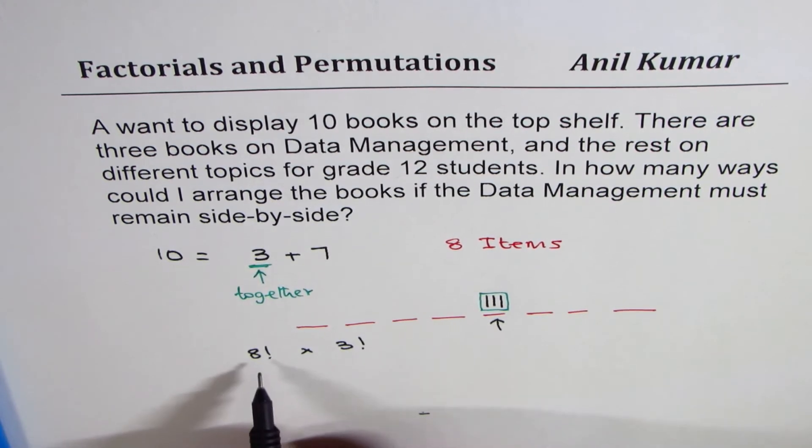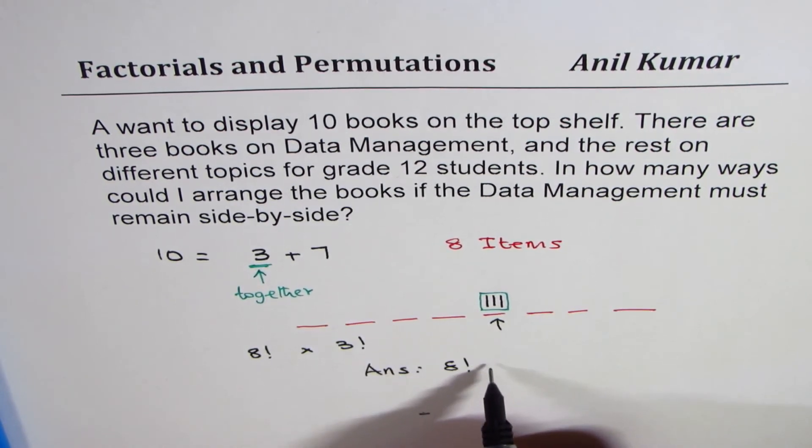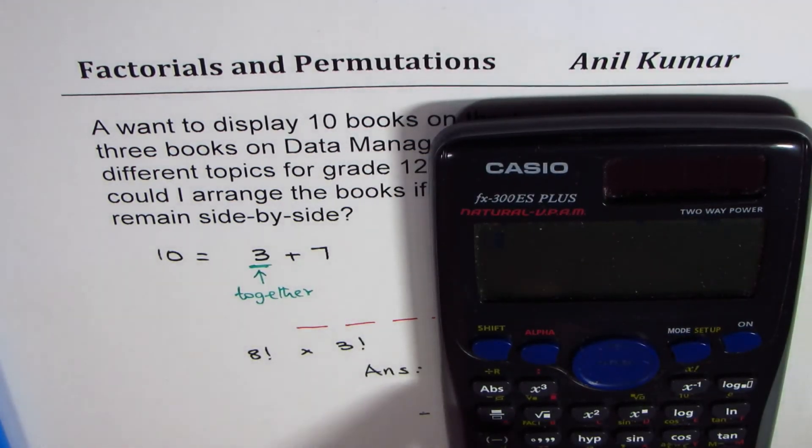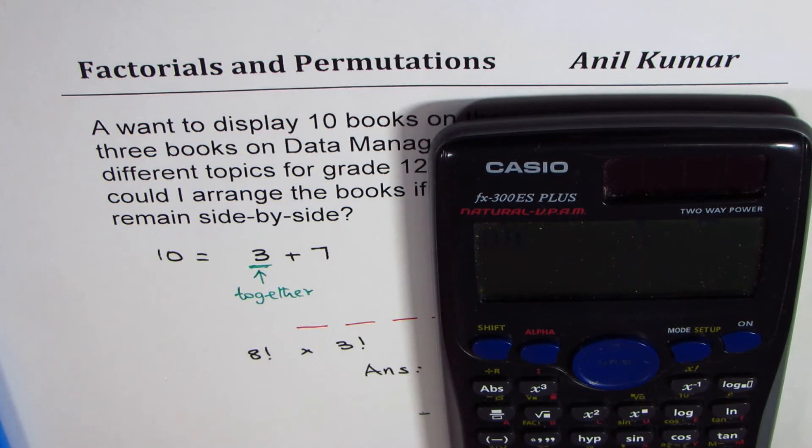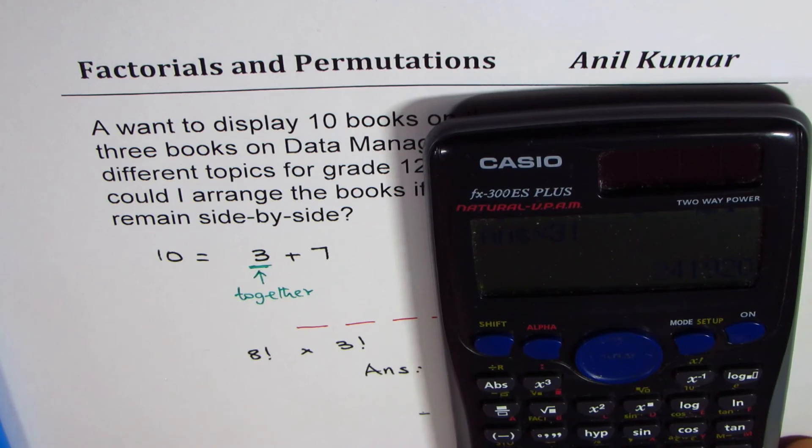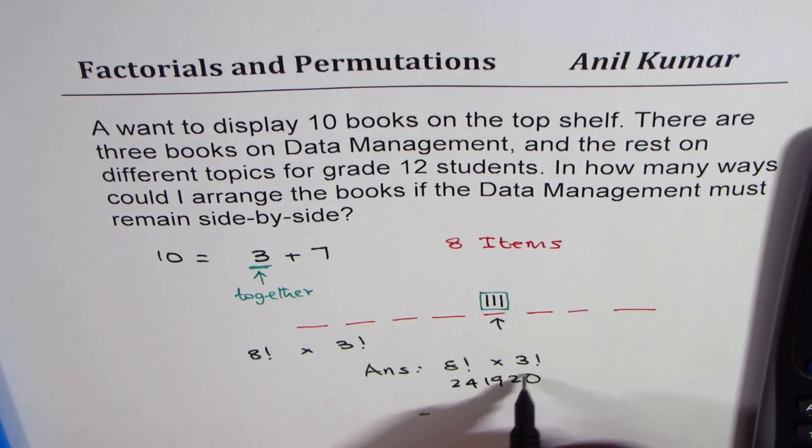And therefore, our answer will be 8 factorial times 3 factorial. So, the answer is 8 factorial times 3 factorial. So, let's figure this out. We have 8 factorial times 3 factorial equals to 241920.